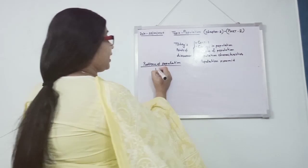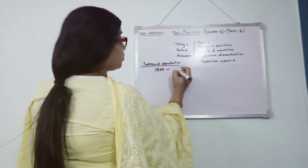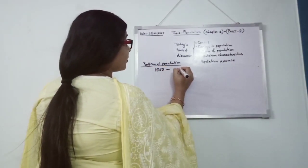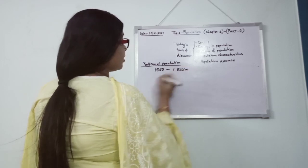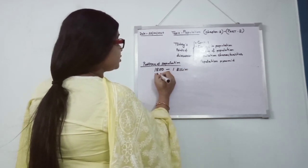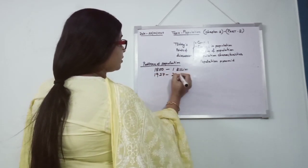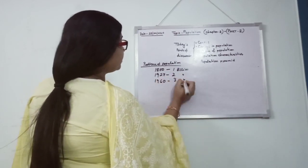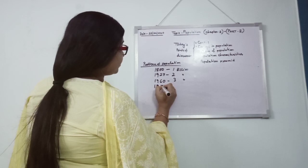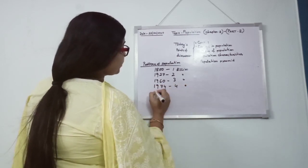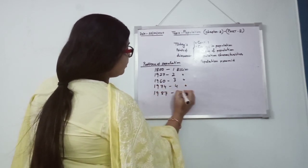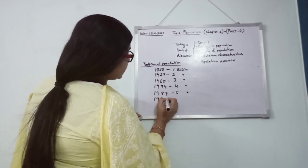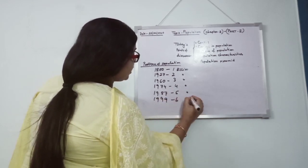Like in 1800 the population was only 1 billion. Then 1927 it became 2 billion, 1960: 3 billion, 1974: 4 billion, 1987: 5 billion, 1999: 6 billion.